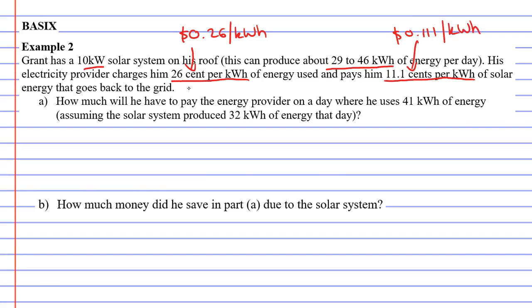Of course, the electricity company is going to pay you less for electricity than what they charge you. Anyway, let's get into question A. How much will he have to pay the energy provider on a day where he uses 41 kilowatt hours of energy, assuming the solar system produced 32 kilowatt hours? So he used more than what the solar panels generated. We're going to subtract them. He used 41, and the solar panels saved him 32. 41 minus 32 is 9. So he's only going to get charged for the 9 kilowatt hours used here.